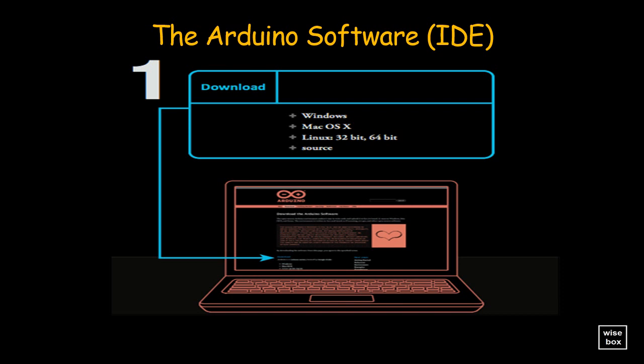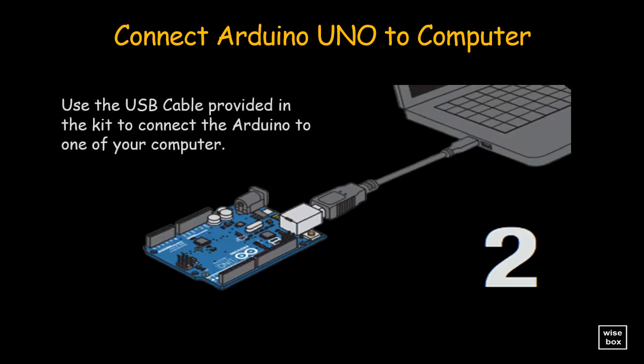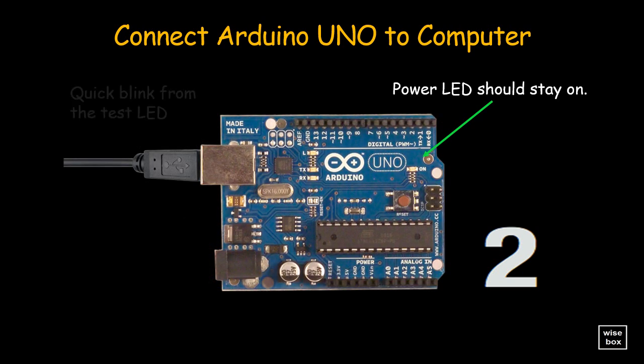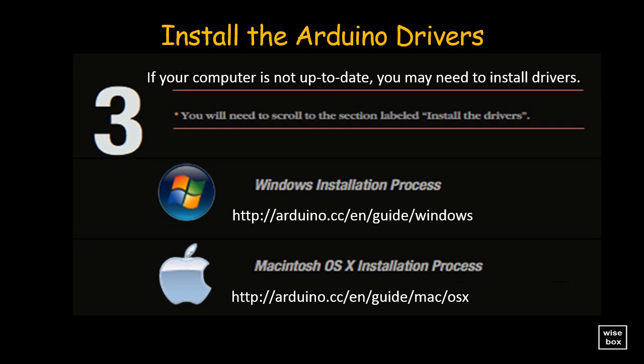Always get the Arduino program installer from the official site, arduino.cc, then make sure to follow the setup instructions. Use the USB cable provided in the kit to connect the Arduino to your computer. The power light should come on and you may notice a quick blink on the pin 13 LED. Depending on your computer's operating system, you may need additional drivers — please consult the URL below on how to install the drivers for Windows.